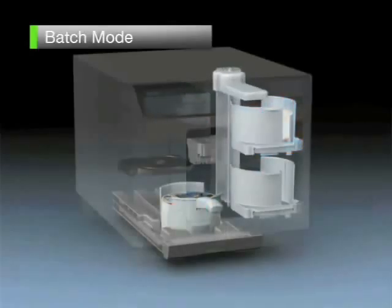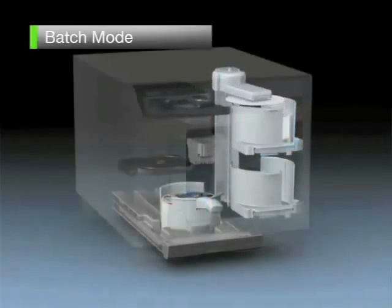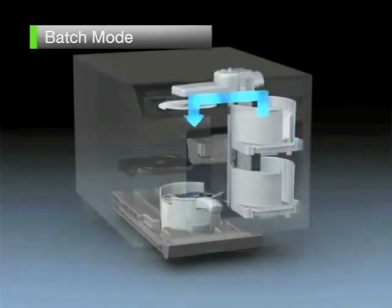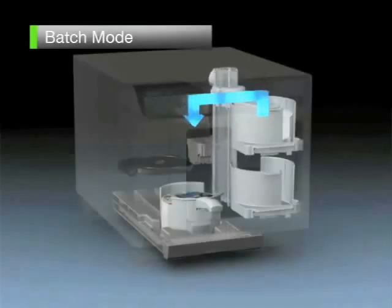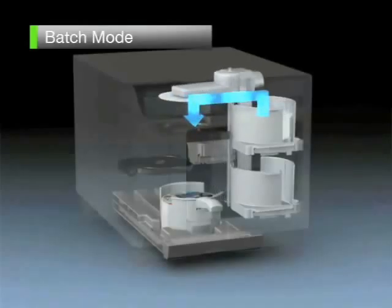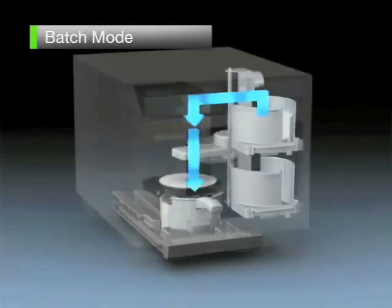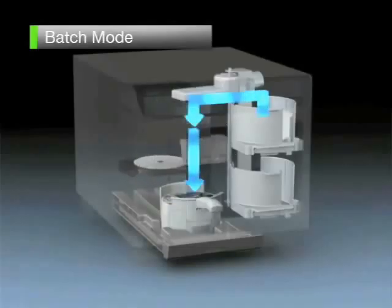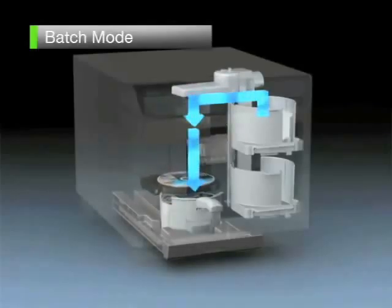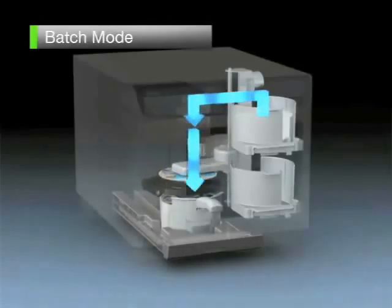The discs from disc 51 onwards will be transported from stacker one and data writing will be carried out in the two drives. After label printing is completed, the discs will be output to stacker two.